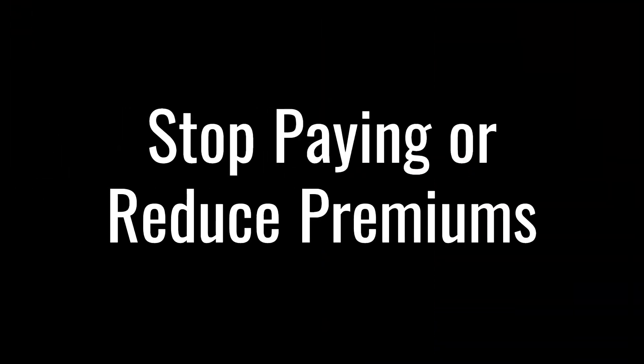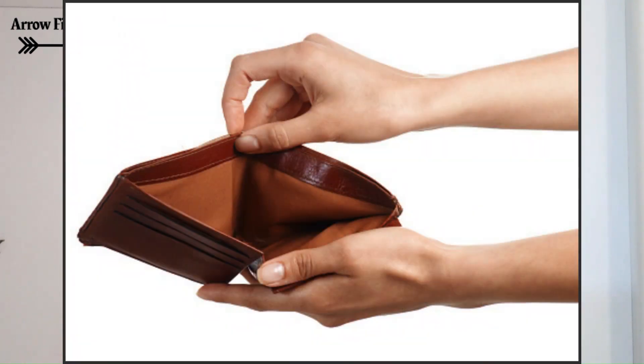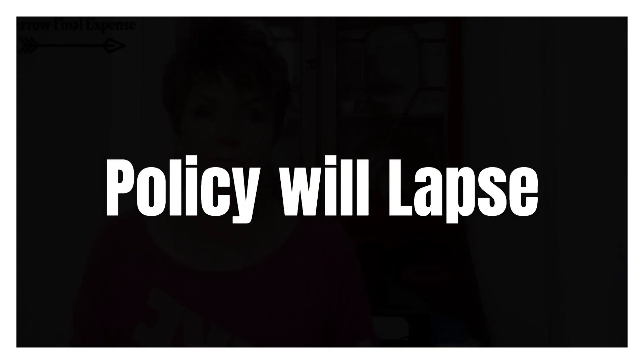If you have enough cash value in your account, you may be able to stop paying or reduce your universal life insurance premiums for a specified period of time. This is a great benefit if money's tight and you need to cut back on your monthly spending. However, keep in mind that if you use all of your policy's cash value to pay your premiums, the policy is going to lapse, which means you no longer have life insurance.